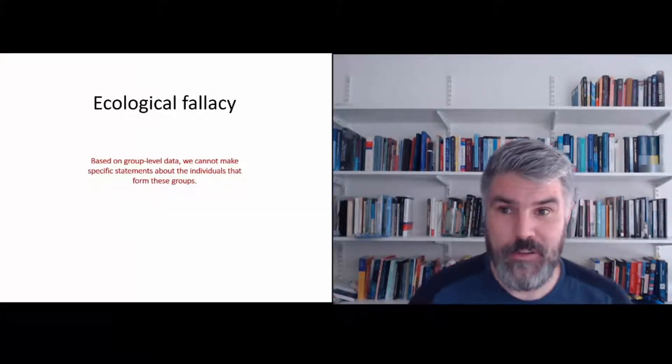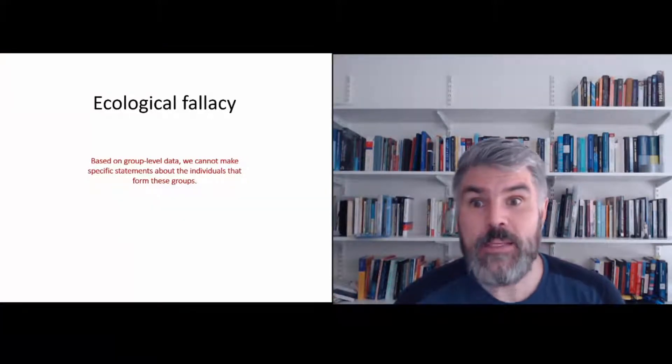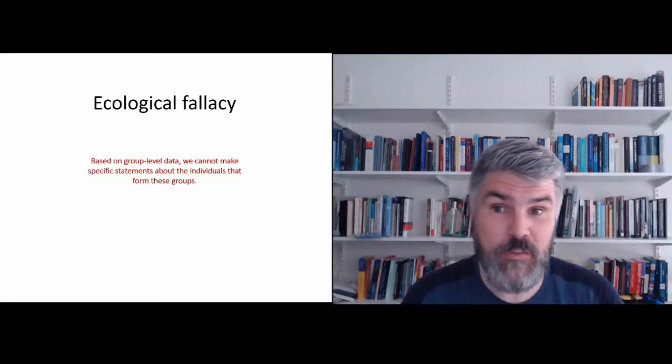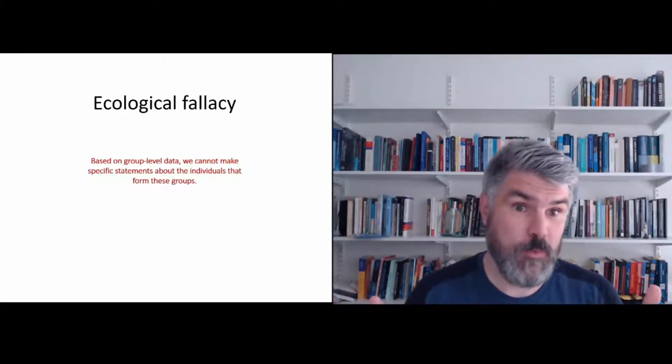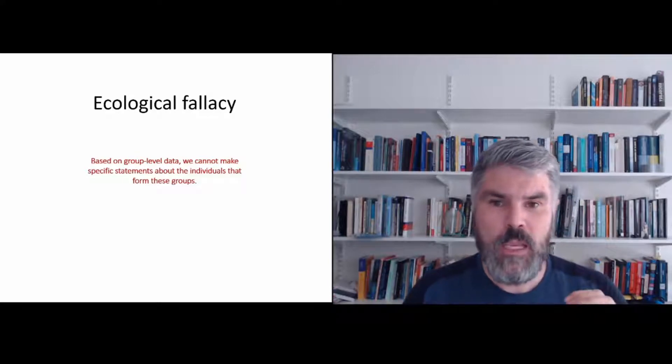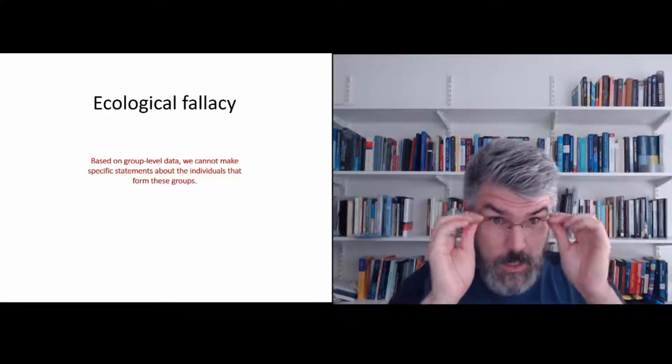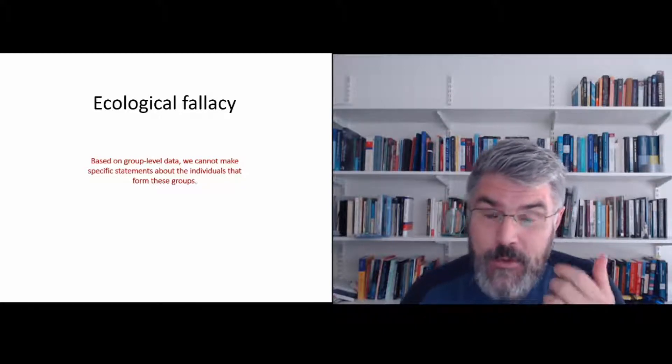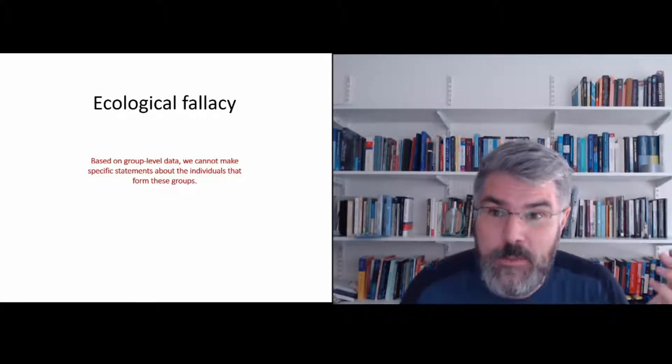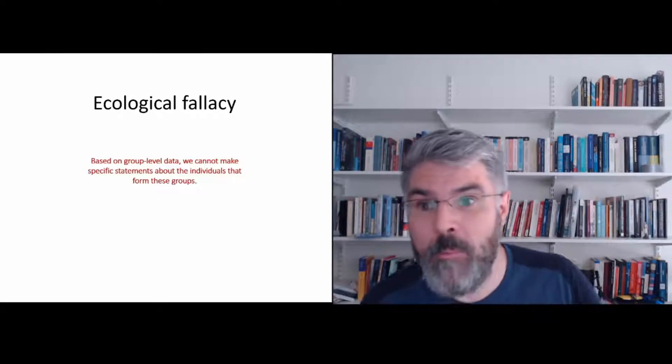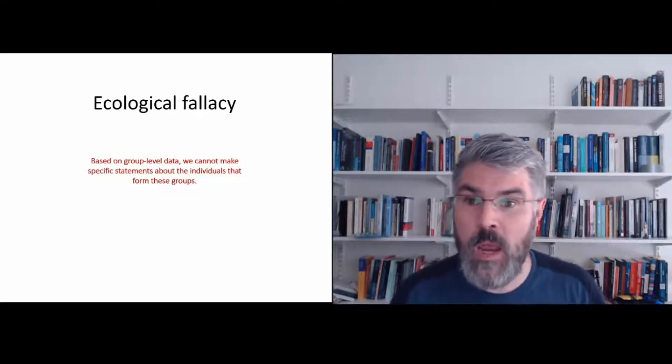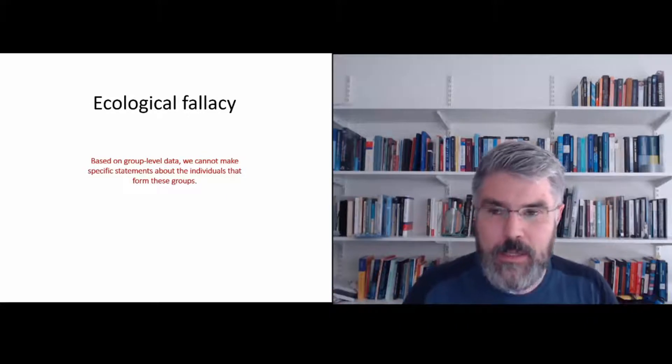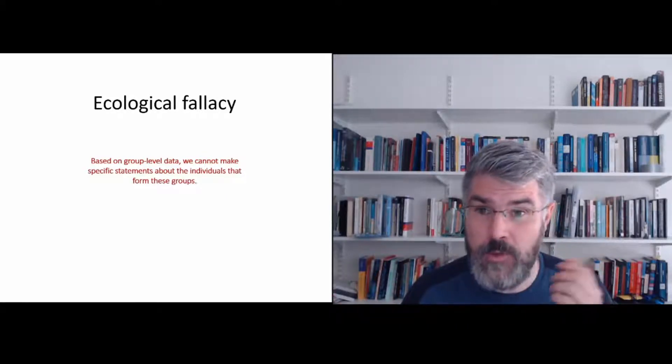So here's the definition of an ecological fallacy. Based on group level data, we cannot make specific statements about the individuals that form these groups. So if you see me wearing glasses, it would be a mistake to then think that I'm very intelligent because you know from elsewhere that people who wear glasses are more intelligent. When you observe something about a particular group that doesn't apply to the individual.